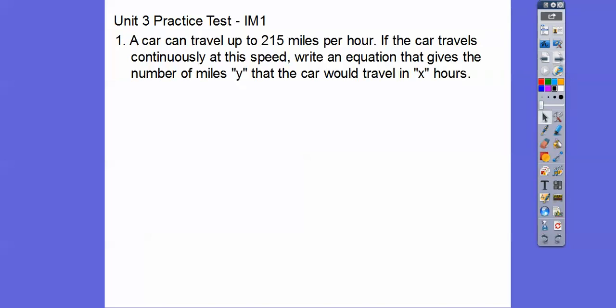A car can travel up to 215 miles per hour — it must be a race car. If the car travels continuously at this speed, write an equation that gives the number of miles y that the car would travel in x hours. Well, if it travels 215 miles per hour for x hours, then y equals 215 times x.